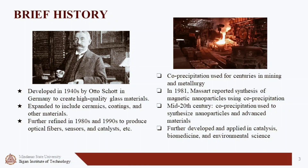The sol-gel process was first developed in the 1940s by Otto Scott to create high-quality glass materials. Over time, it was refined and expanded to include the production of ceramics, coatings, and other materials. In material science, the sol-gel process is a method for producing solid materials from small molecules, while co-precipitation has been used for centuries to produce metal powders and alloys. In 1981, Massart reported the synthesis of magnetic nanoparticles using this technique.